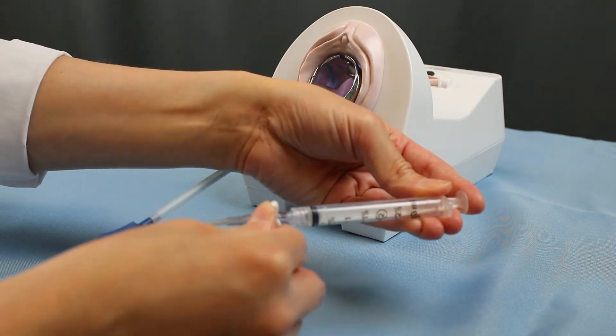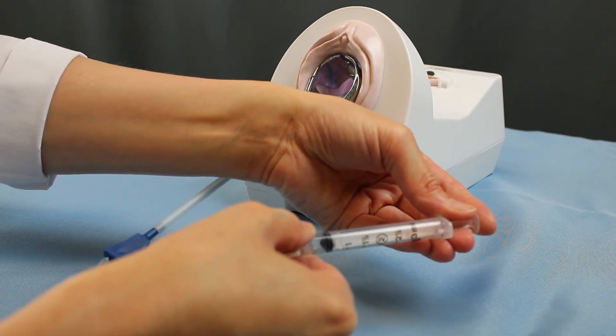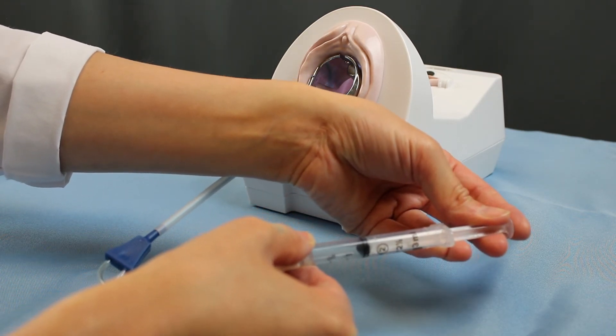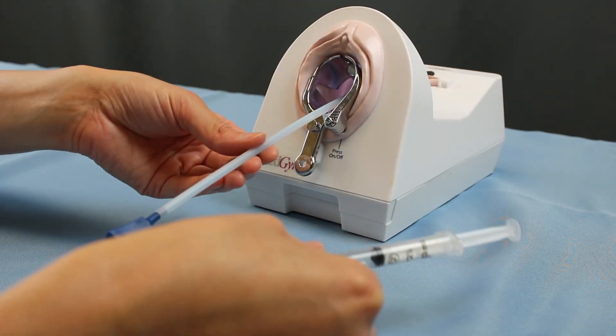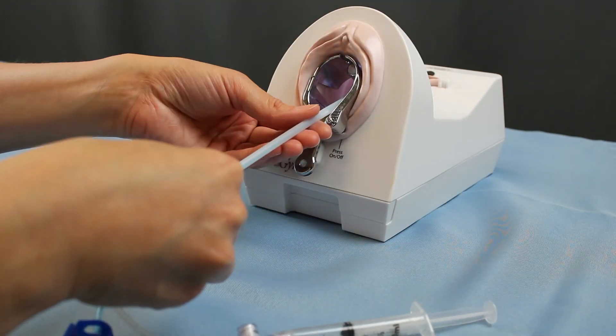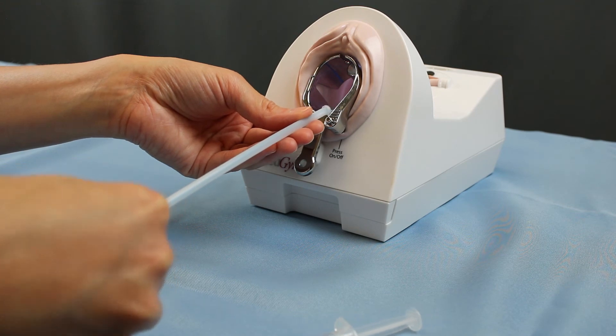After imaging is complete, rotate the stopcock 90 degrees and carefully pull back on the syringe to deflate the balloon. Gently remove the catheter from the patient.